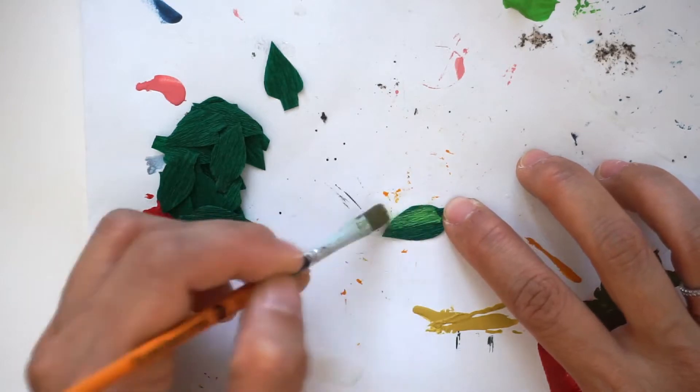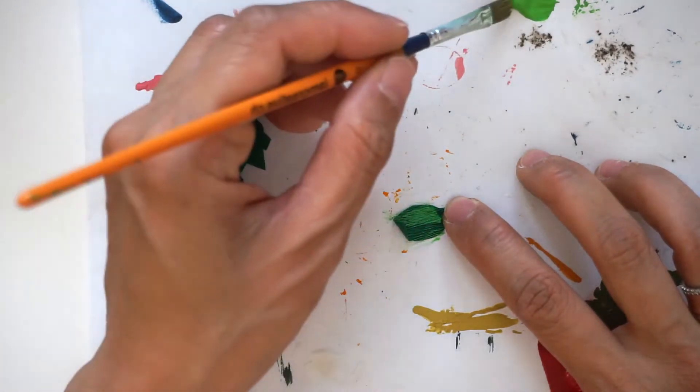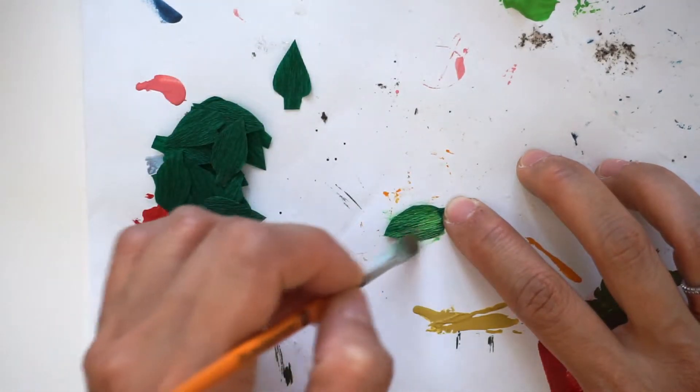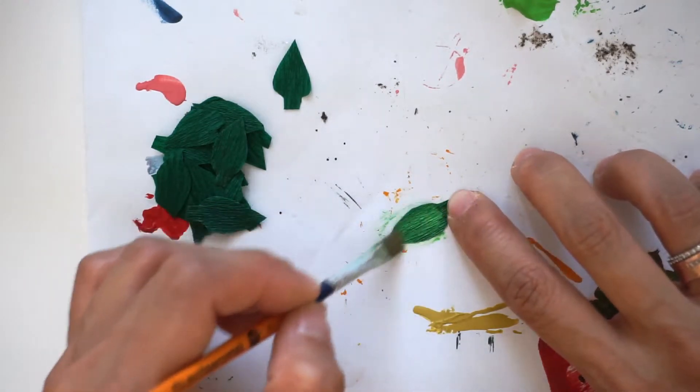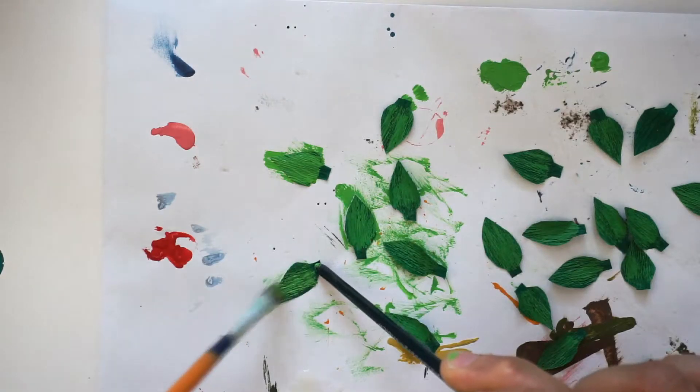Since the crepe paper that I am using is too dark, I decided to paint it over with a lighter color just to lighten the leaves and also to accentuate the texture.